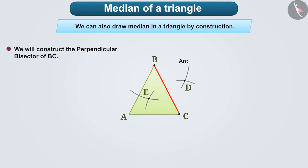Now, we will join these two points so that we get the perpendicular bisector of the side BC.